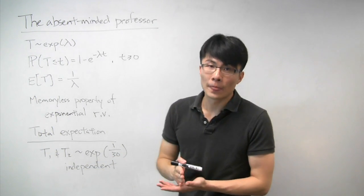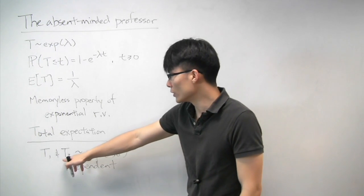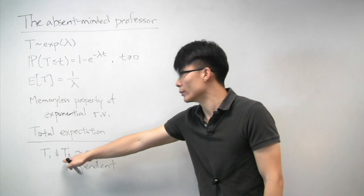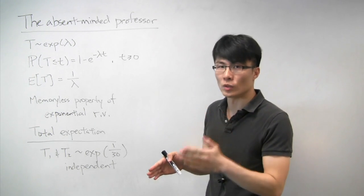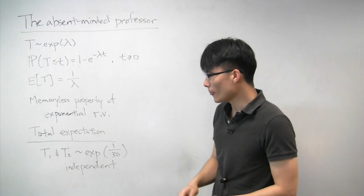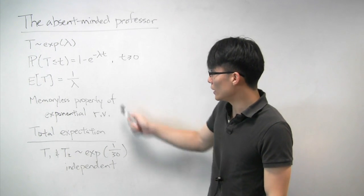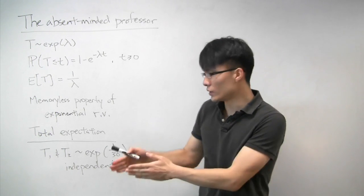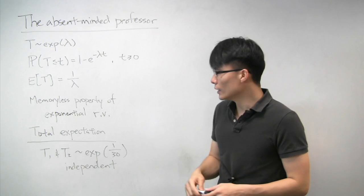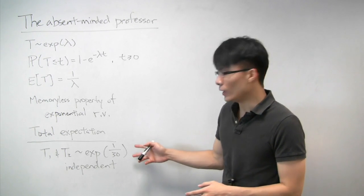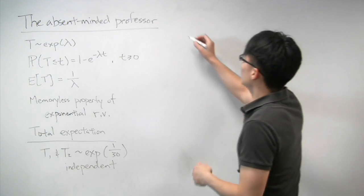The first student arrives on time and takes some random amount of time t1. The second student arrives exactly five minutes late, and whenever the second person meets with the professor, that student will take some random amount of time t2. What we're asked to find is the expected time between when the first student arrives — call that time 0 — and when the second student leaves. There is a small wrinkle because the students may not go exactly back to back, so let's draw out a timeline of what might happen.